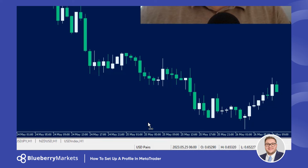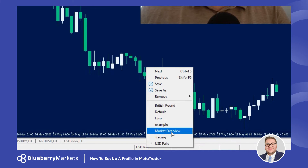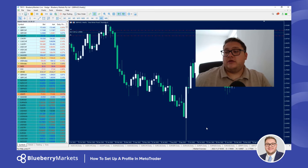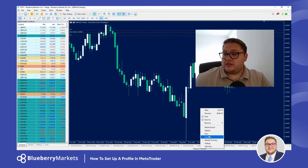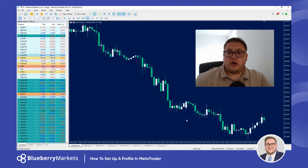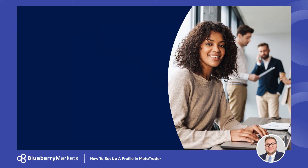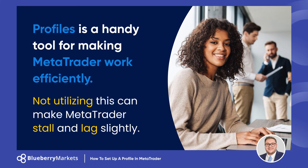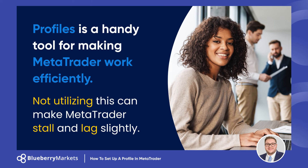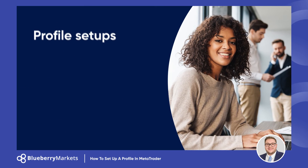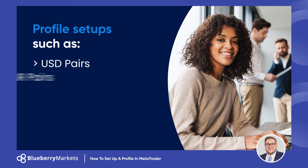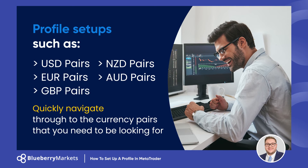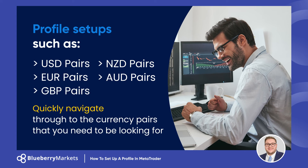Now just to differentiate between profiles — if I click on one called market overview, it's going to take me to my market overview charts. If I go back to our US dollar pairs profile and click that, it's going to open those pairs I've got there. This is really handy for making MetaTrader work efficiently, because if you've got all the pairs open MetaTrader can stall or lag slightly. But if you've got profiles set up — say US dollar pairs, euro pairs, pound pairs, New Zealand pairs, and Aussie pairs — you can quickly navigate to the currency pair you need.